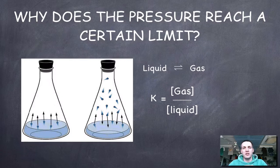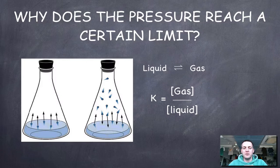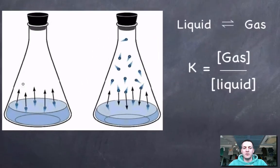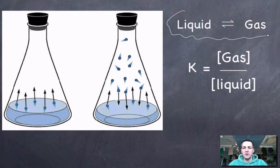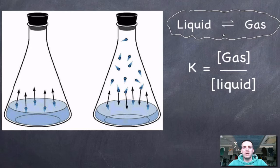Vapor pressure will always reach a certain limit depending on temperature. If I place a liquid inside a conical flask, some of it will evaporate. Once there is some vapor above the liquid, some of it can condense. We've set up an equilibrium, which is why this is called the equilibrium vapor pressure.